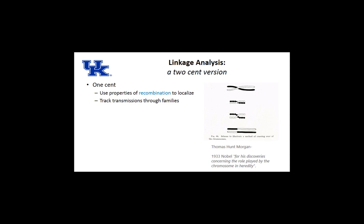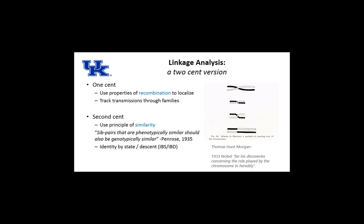Here's linkage — a two-cent version. First cent: use properties of recombination to localize the genetic DSL, the disease susceptibility locus. We track transmission through families. If a disease and the locus are co-segregating, it gives us evidence to narrow down genetically where that player is. I have to make a call about Thomas Hunt Morgan, who's a Lexingtonian — a Nobel laureate involved in the chromosomal theory of heredity.